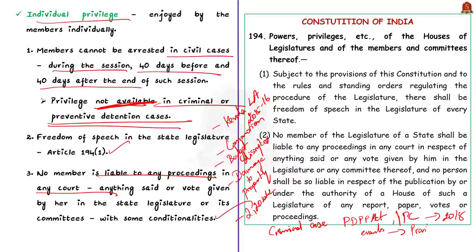The prosecutor argued the protest was an implicit individual privilege under Article 194(1), which provides freedom of speech on the floor of the legislature. The chief judicial magistrate declined the withdrawal, the High Court upheld that decision, and finally the matter came before the Supreme Court.